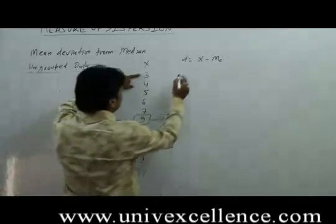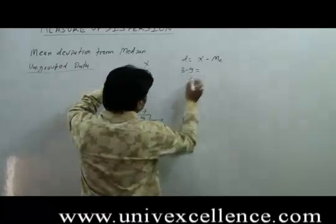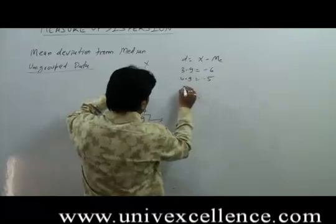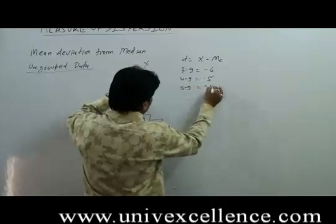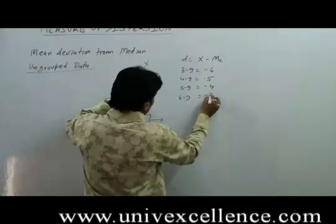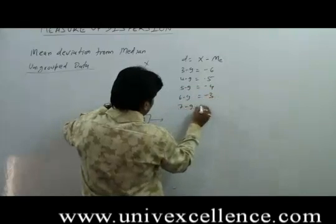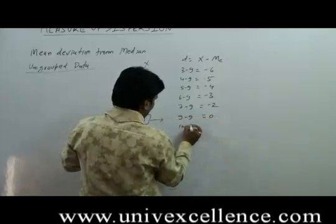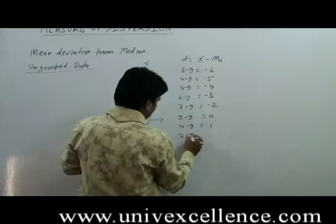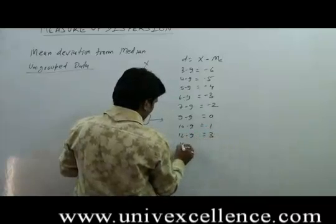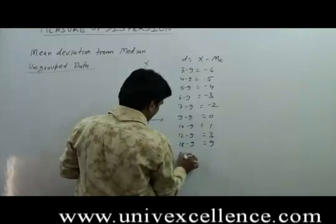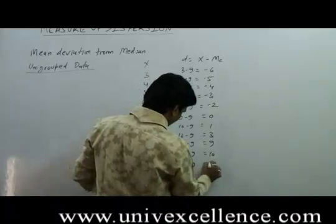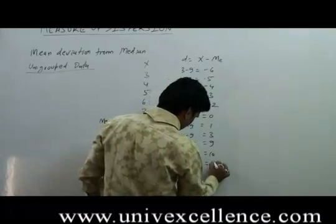So the deviations are: 3−9 = −6, 4−9 = −5, 5−9 = −4, 6−9 = −3, 7−9 = −2, 9−9 = 0, 10−9 = 1, 12−9 = 3, 18−9 = 9, 19−9 = 10, 21−9 = 12.